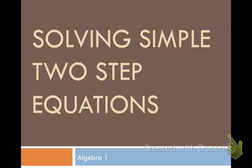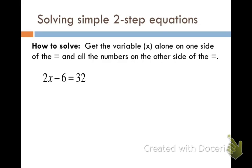Solving simple two-step equations. To solve simple two-step equations we need to get the variable, which is typically x, alone on one side of the equal sign and all the other numbers on the other side of the equal sign.